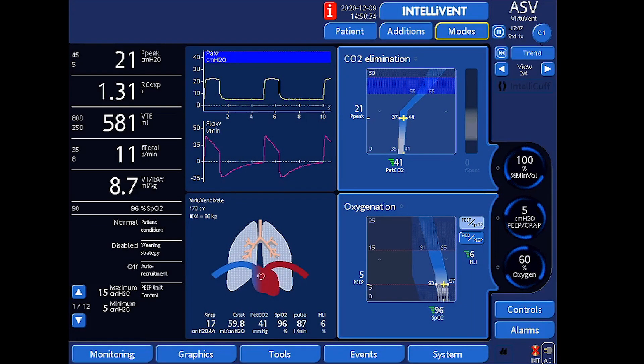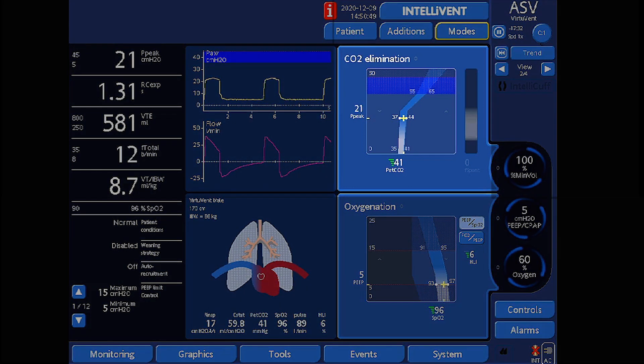This scenario shows a moderate COPD patient who is intubated and being ventilated with IntelliVent ASV. At a peak inspiratory pressure of 21 cm of water, the default target range for PET CO2, according to the current P-peak, is 37 to 44 mmHg.